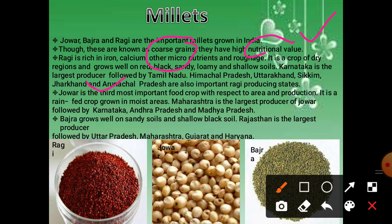Jowar is the third most important food crop with respect to area and production. It is rain-fed, meaning it gets water only from rain, and grows in moist areas. Maharashtra is the largest producer of jowar, followed by Karnataka, Andhra Pradesh and Madhya Pradesh. Then there is bajra, which grows well on sandy soil and shallow black soil. Rajasthan is the largest producer of bajra, followed by UP, Maharashtra, Gujarat and Haryana. These are the major states for millet production.